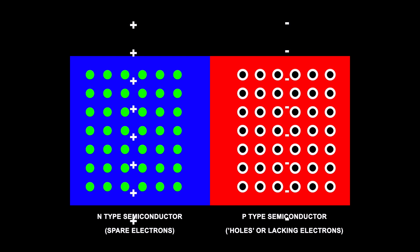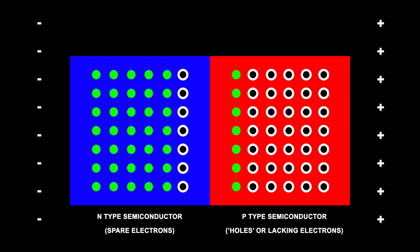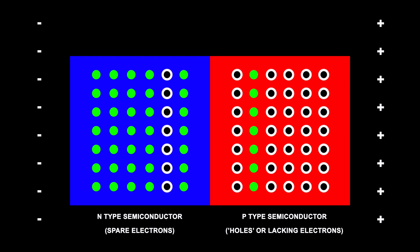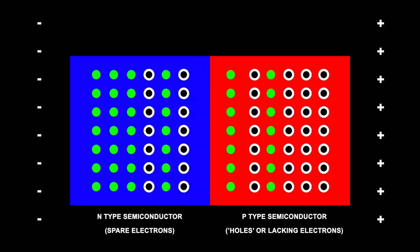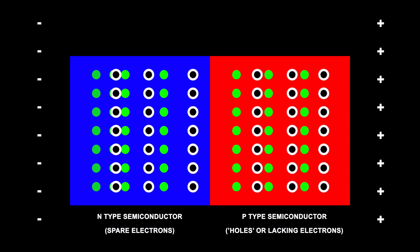If you flip the battery around the diode conducts electricity just fine. The free electrons of the n-type silicon are repelled by the negative terminal of the battery. The holes in the p-type silicon are repelled by the positive terminal. At the junction between the n-type and the p-type silicon holes and free electrons meet. The electrons fill the holes. These holes and free electrons cease to exist and new holes and electrons spring up to take their place. The effect is that current flows through the junction.